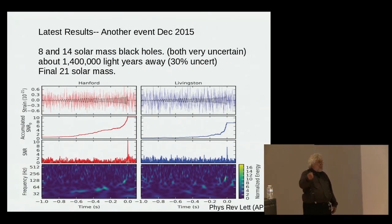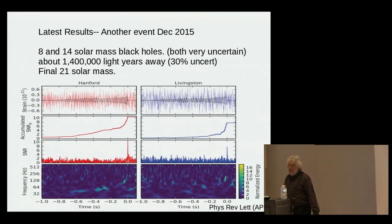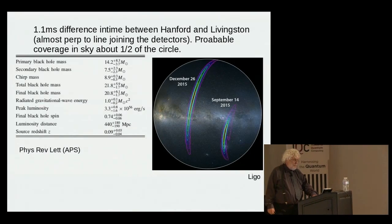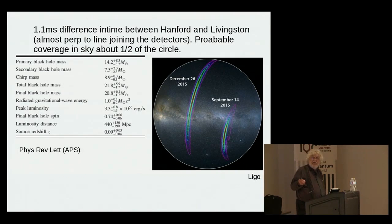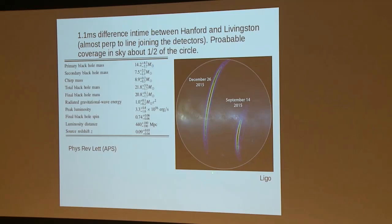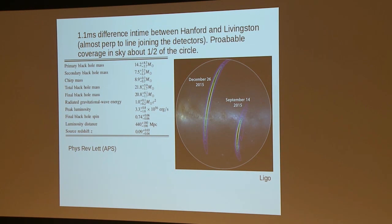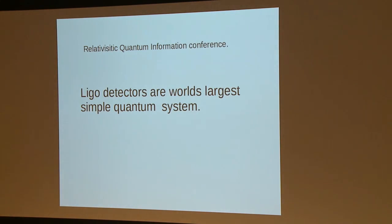So one has two very strong signals in three months. These things seem to be happening all the time, and we only now have the sensitivity to start seeing them. Because the second signal is weaker, it's much harder to tell where it came from - the time difference between Hanford and Livingston was about 1 millisecond instead of 7, indicating it was almost directly on a circle perpendicular to the line joining the two detectors.